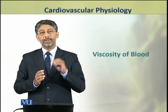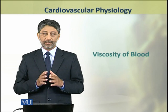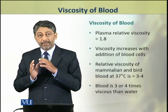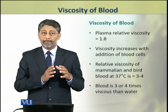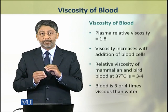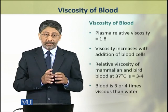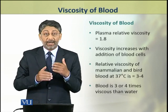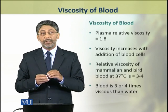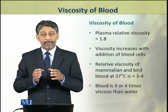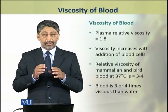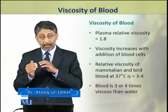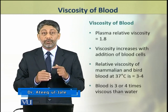In this topic we shall discuss the viscosity of blood and its effect on flow. Plasma relative viscosity is about 1.8, that is plasma is about 1.8 times more viscous than water. Viscosity of plasma increases when blood cells are added, so the viscosity of whole blood in mammals and birds is about 3 to 4 — that is, blood is 3 to 4 times thicker or more viscous than water.